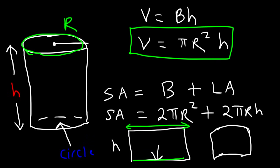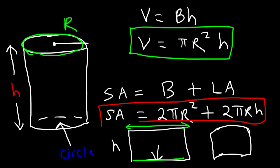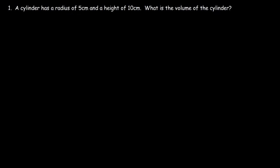So that is the surface area: it's basically the area of the base — the area of the circle on top and the bottom — plus the lateral area, the area around the cylinder. Those are the two formulas you need to calculate the volume and the surface area of a cylinder. Now let's work on some word problems.